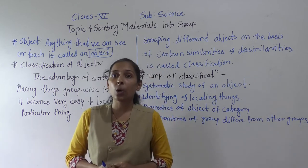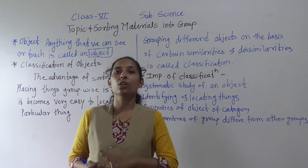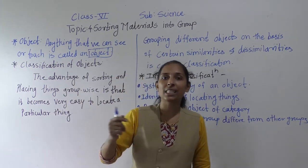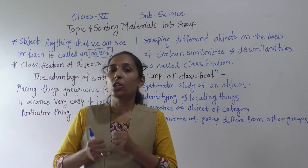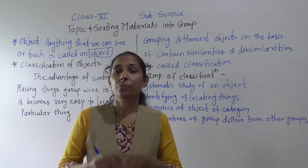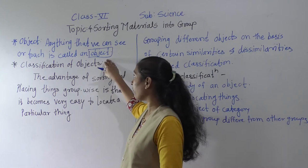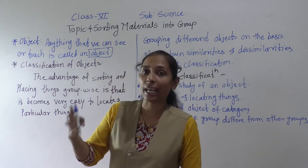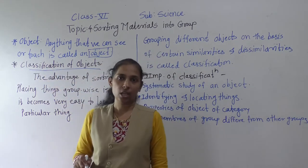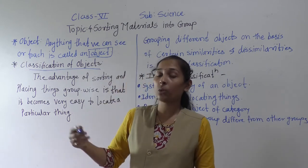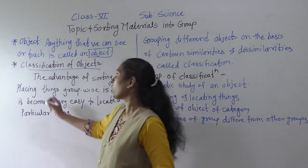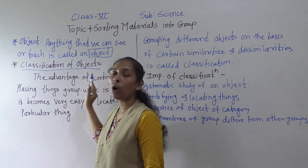To study all these different objects, it is necessary to classify or group them. If we make groups of different objects, it becomes very easy for us to do further study. So our next point is the classification of objects. Why is it necessary to classify objects? To do the further systematic study of a particular object, classification is a must.